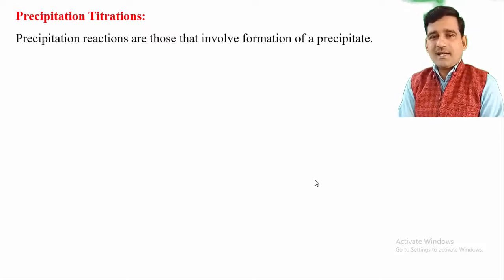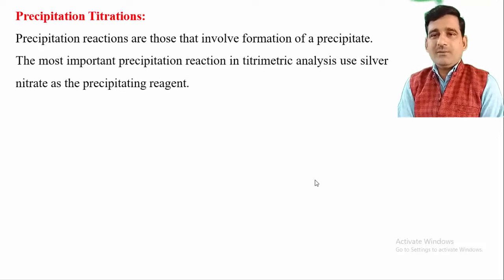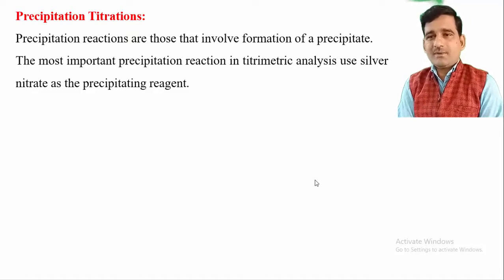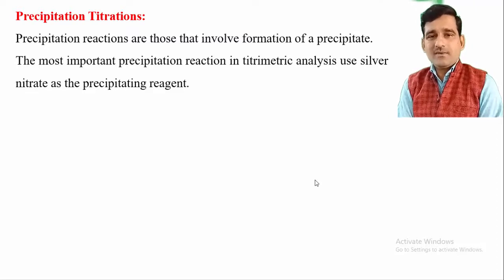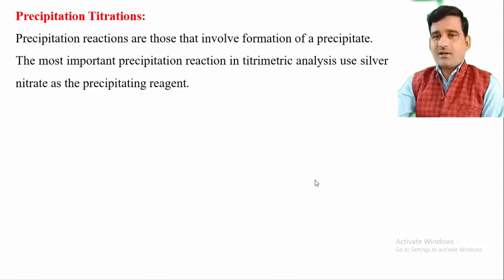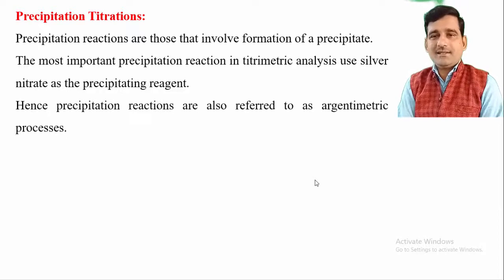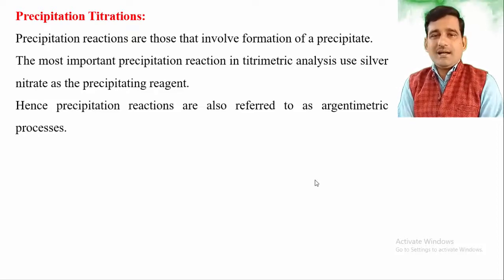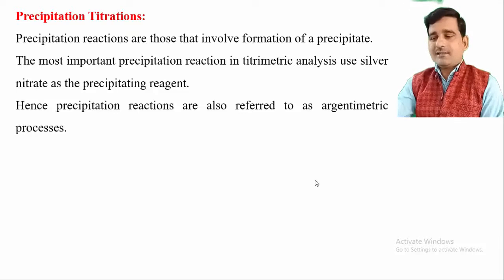These are reactions involved in the formation of a precipitate. In most titrometric analysis of precipitation reactions, silver nitrate is used as a precipitating reagent because silver can form a precipitate with many elements. Therefore, precipitation reactions are also known as argentimetric processes or argentimetric titrations.